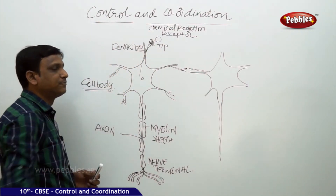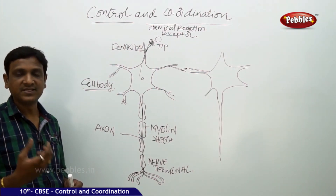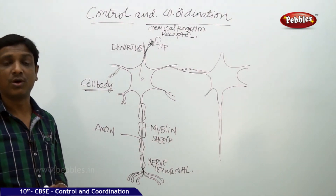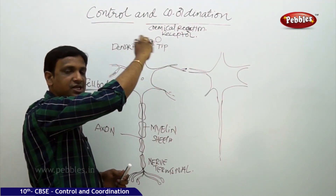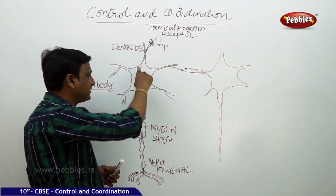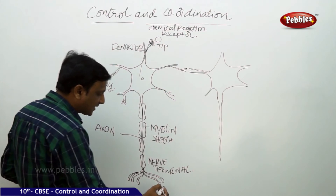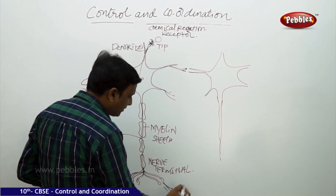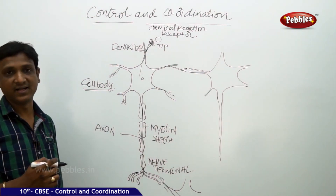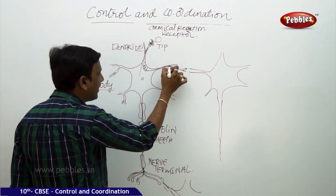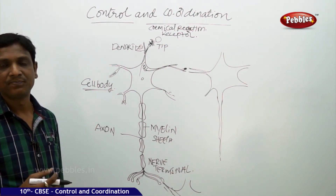The receptors located in the sense organs — the gustatory receptors in the tongue, the olfactory receptors in the nose — whenever they receive information, a chemical reaction takes place which generates an electrical impulse carried by the nerve cell. This electrical impulse passes through the nerve cell and at the tip it connects to the dendrite of another nerve cell. However, the electrical impulse is not directly passed from one nerve cell to another as an electric current.